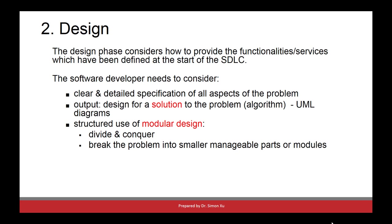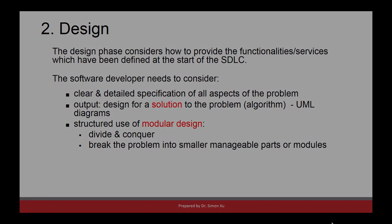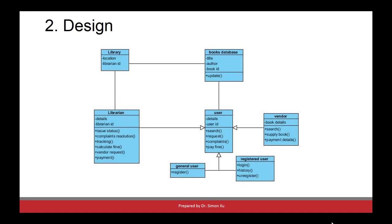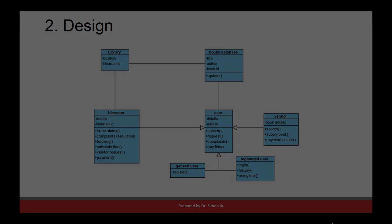For each module, we need to understand what the output and input data are. For example, for the library system, after the design phase is done, we come up with class diagrams which include seven classes for the system. Each class represents one module.